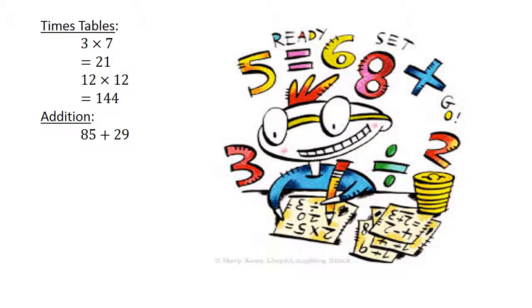Addition: 85 plus 29 equals 140. Subtraction: 28 minus 74 equals negative 46.